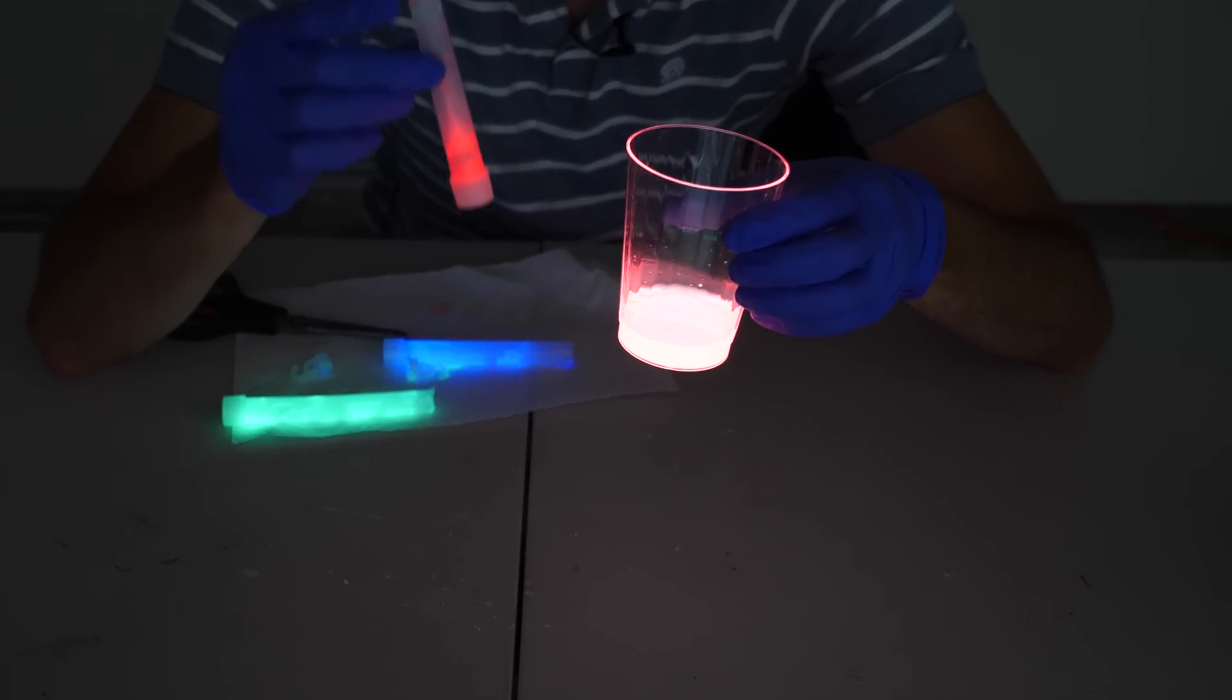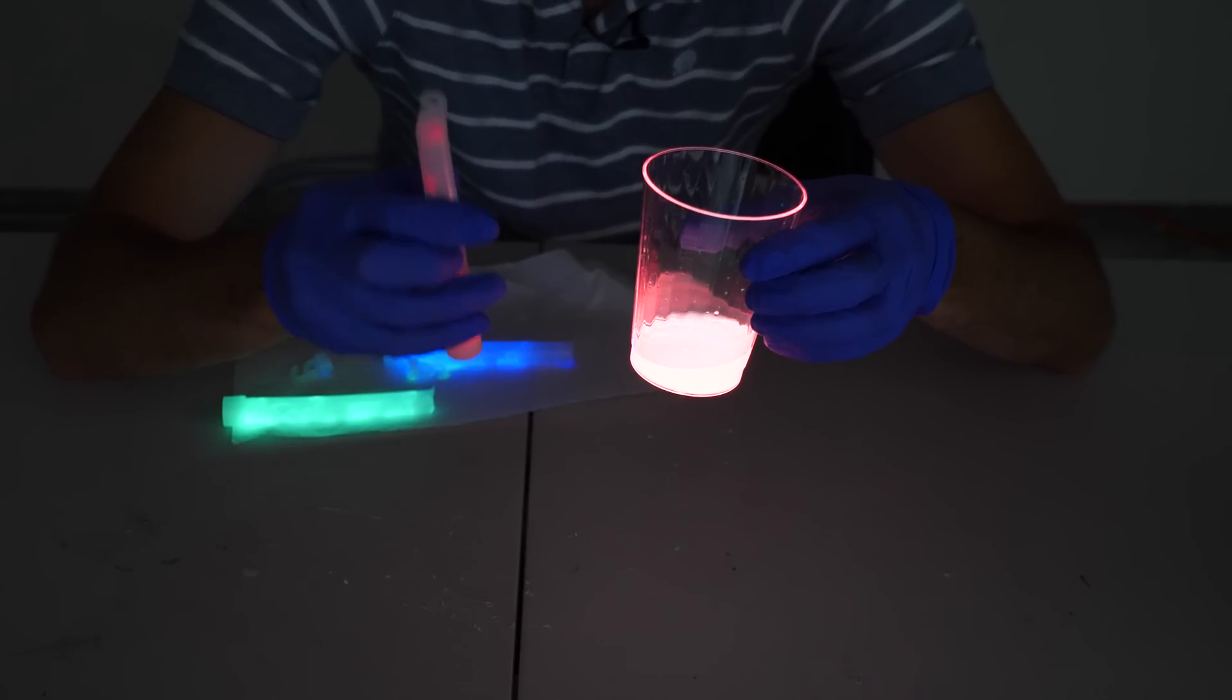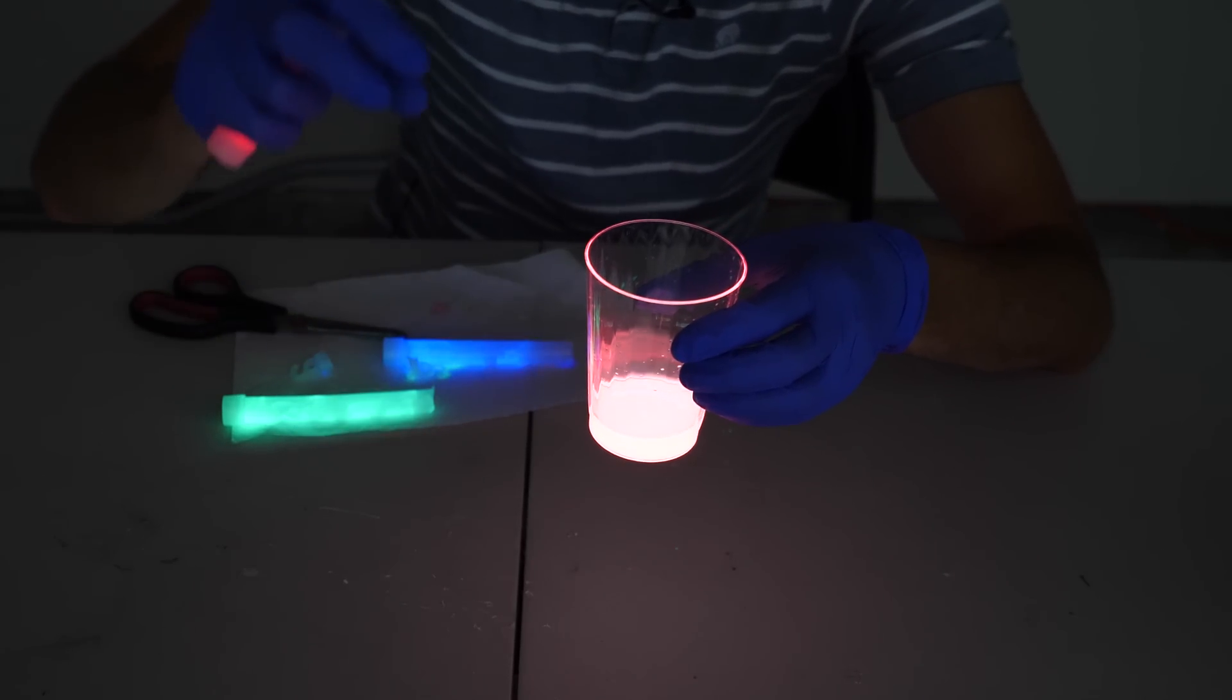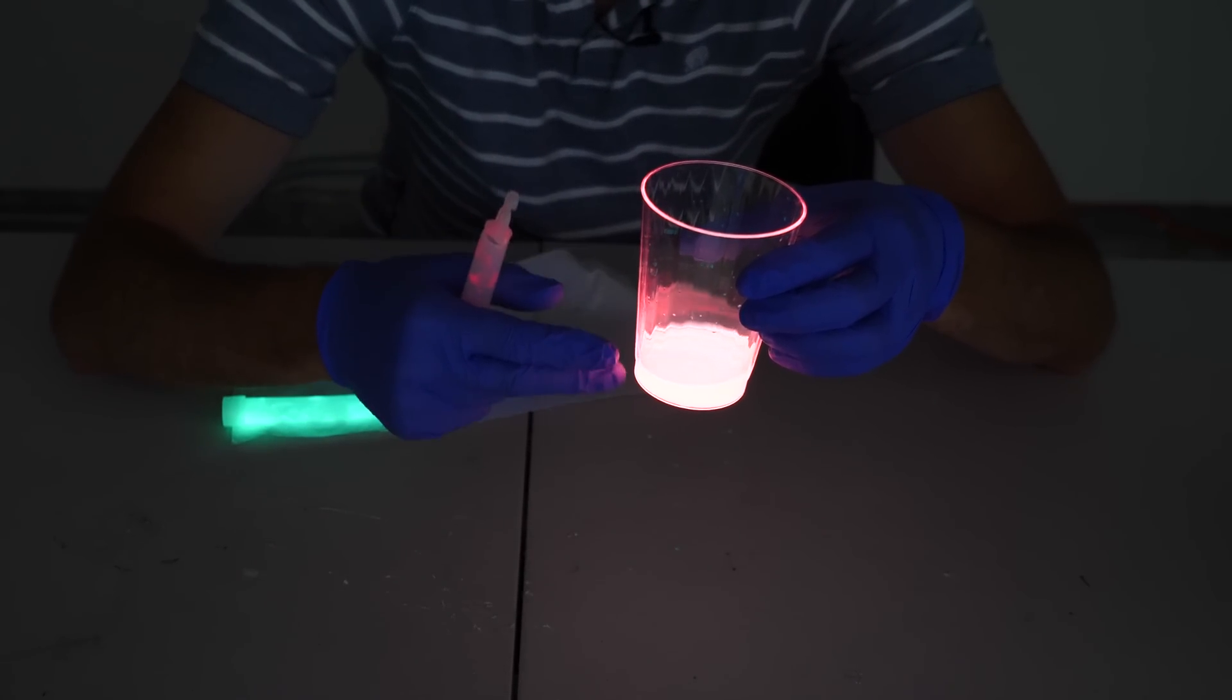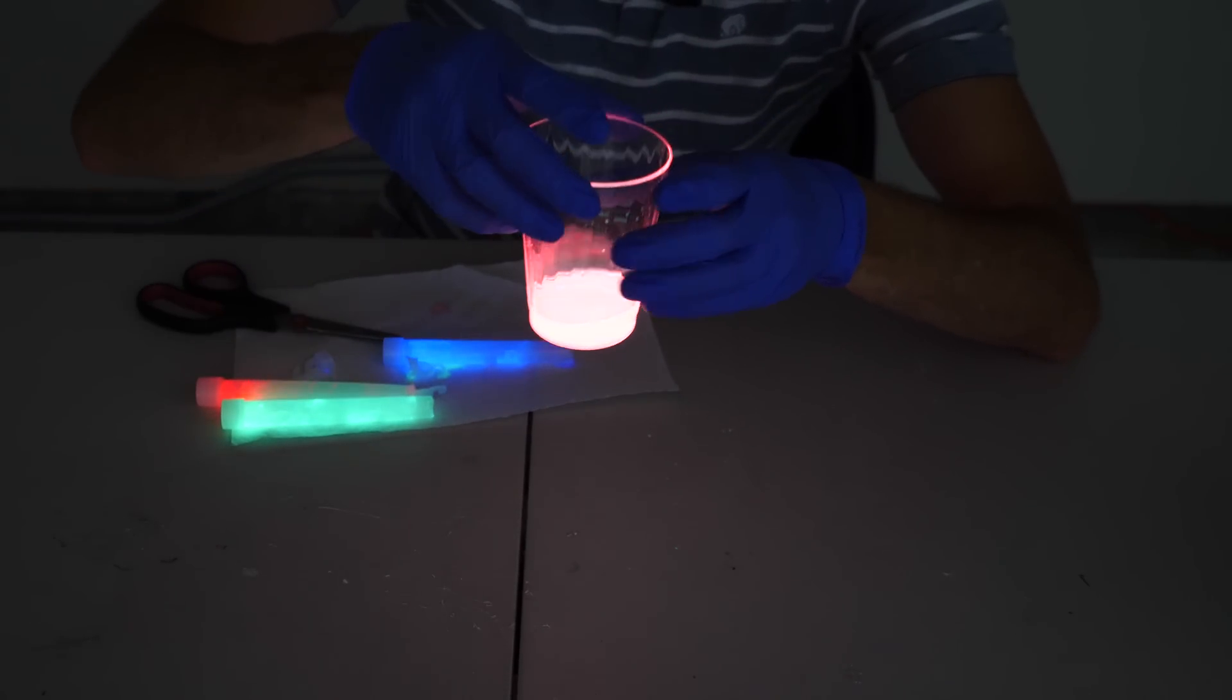So what's actually going on here is this red glow stick actually has a little bit of red dye in it. And that red dye means that it's absorbing some blue and green light. So even though this should be producing white technically, it's kind of reddish because some of that blue and green light are being absorbed and so we're seeing a reddish outcome.